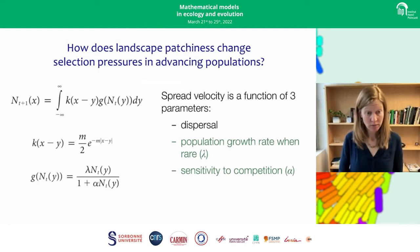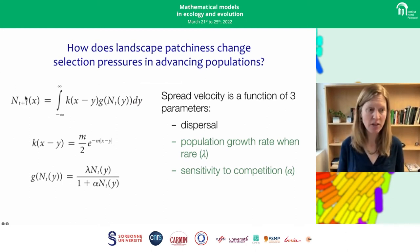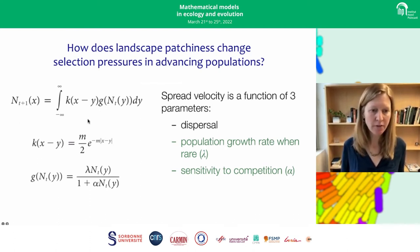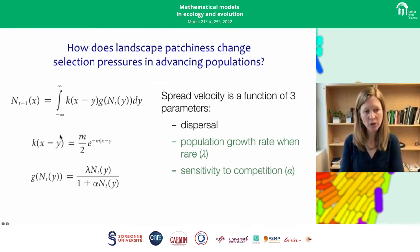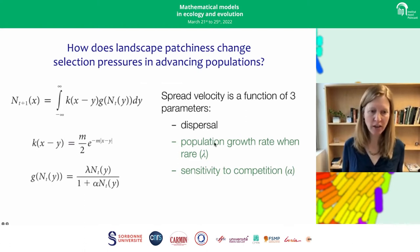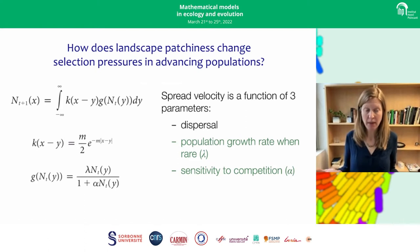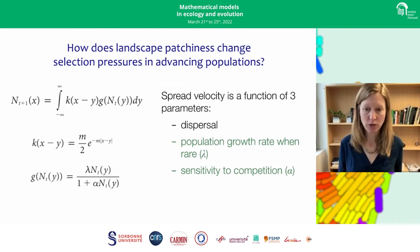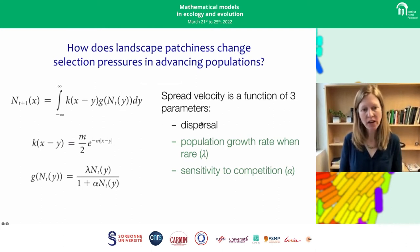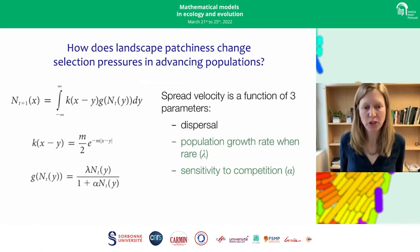To answer this question, we used a series of simulation models as well as an analytical solution based on an integral difference model for spread. This very simple model has just three parameters: we're predicting the number of individuals at time step t+1 at location x as a function of dispersal — using a simple negative exponential dispersal kernel — so it's a function of how many offspring move from y to x, but also a function of how many individuals are produced at each location y. This growth function is a function of two demographic traits: the population growth rate when rare (lambda), and the sensitivity to competition (alpha). As the number of individuals in a patch increases, the population growth rate of any one individual is reduced as it gets more crowded.